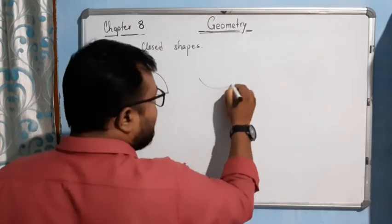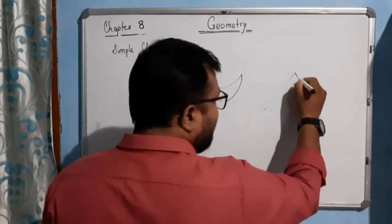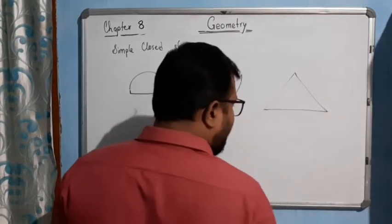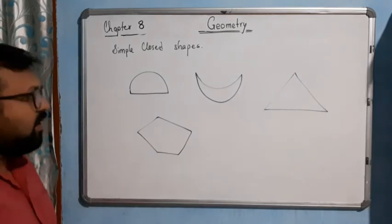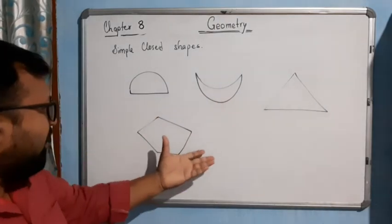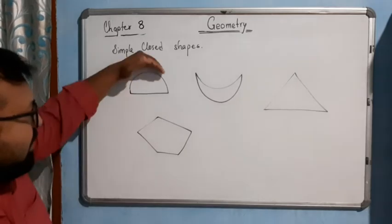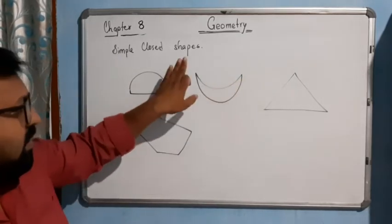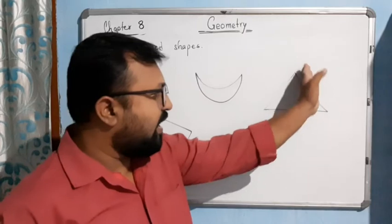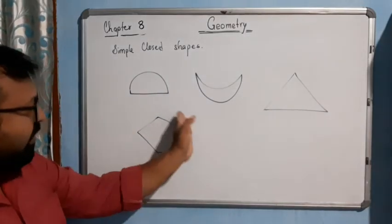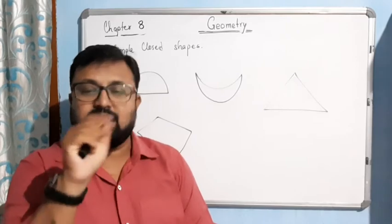If I draw like this, this is also a closed figure. If I draw like this, this is a closed figure. If I draw like this, this is also a closed figure. But in these four pictures I have drawn on the board, you will see one has a straight line and one curve, here both lines are curved, in this case all sides are line segments — straight lines. So polygon means a simple closed figure made up of line segments, not curved lines.